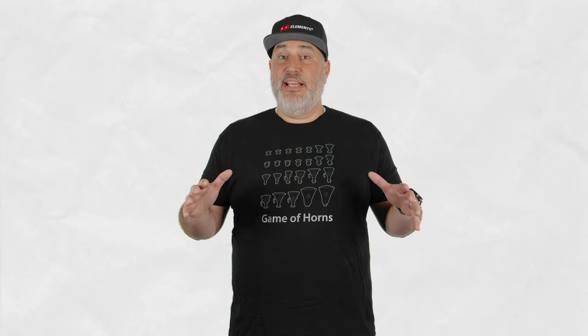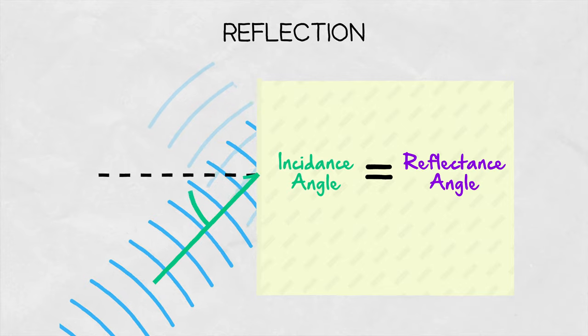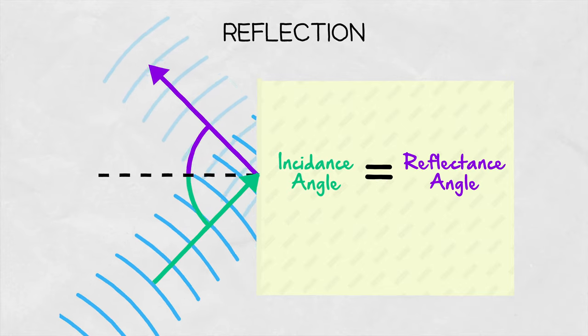Any transition between materials causes at least some of the electromagnetic energy to reflect. The law of reflection states that the angle in which the wave hits the boundary is equal to the angle at which it is reflected.